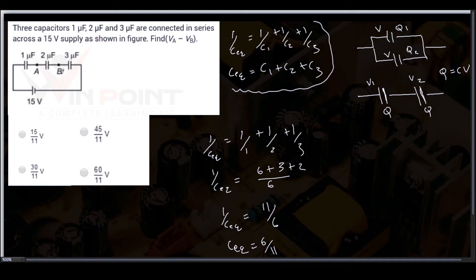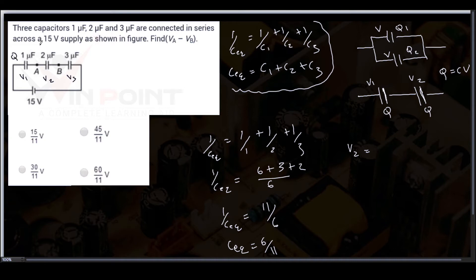We need to find the potential difference across the two microfarad capacitor. Since it is a series connection, the potential difference will be different across each capacitor — V1, V2, V3. We need to find V2. In series connection, the charge is the same everywhere — Q, Q, Q.